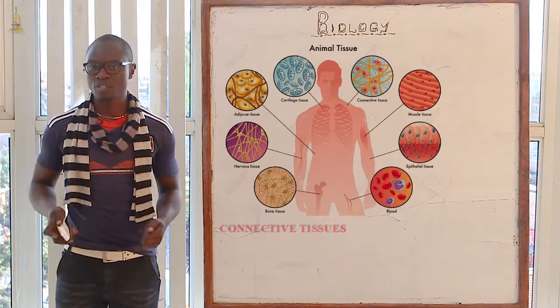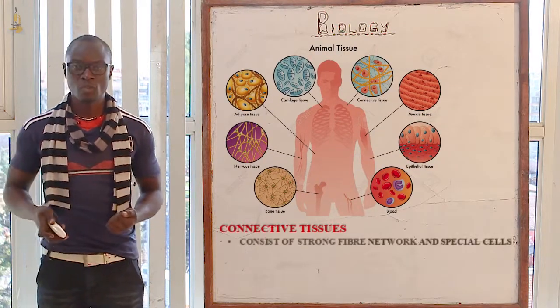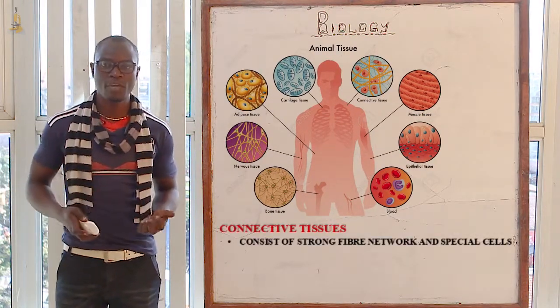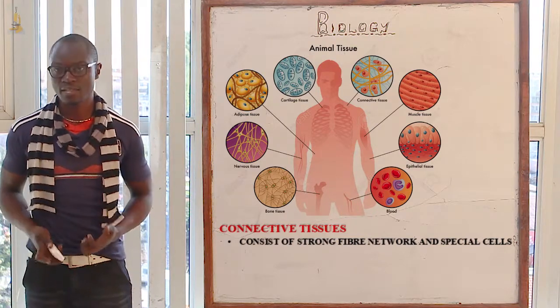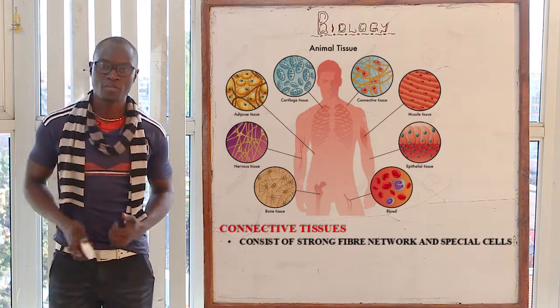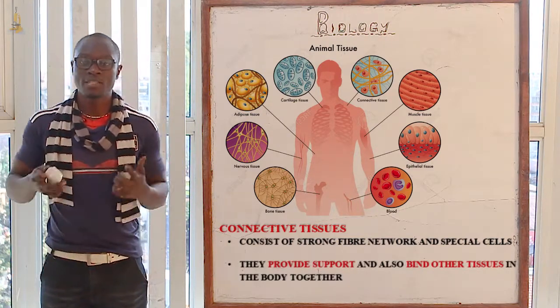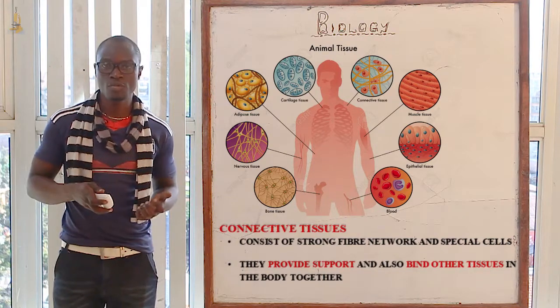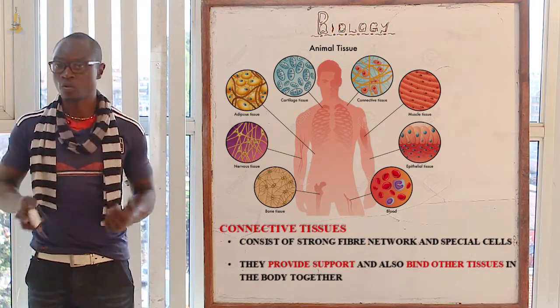In animal tissue, the first tissue we have is the connective tissue, which mainly consists of a network of strong fibers and specialized cells. The function of the connective tissue is to provide support and bind other tissues together.